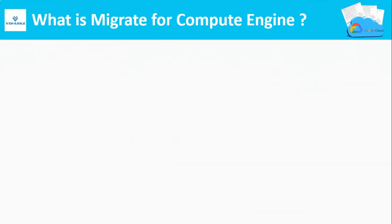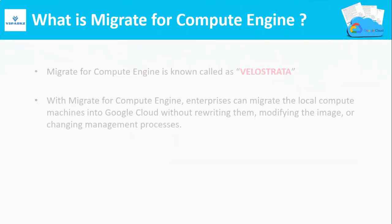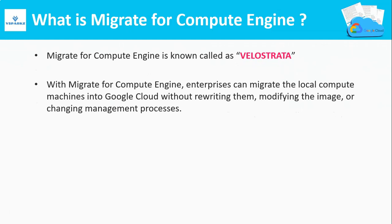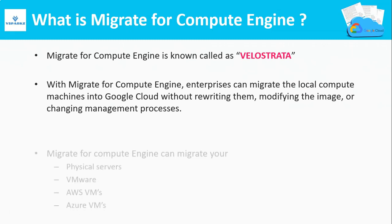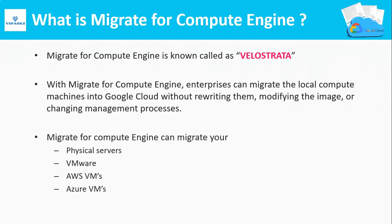What is Migrate for Compute Engine? Migrate for Compute Engine is also called as Velostrata. With this product, you can migrate your local compute machines to Google Cloud Platform without changing or modifying your underlying local machine or compute. With Migrate for Compute Engine, you can migrate your physical servers, VMware VMs, AWS EC2 VMs, and Azure VMs as well.